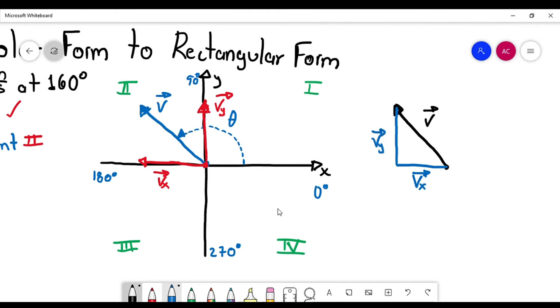So let's write the formula to find Vx. Remember that Vx equals the magnitude of the vector times the cosine of the angle. And Vy equals the magnitude of the vector times the sine of the angle.